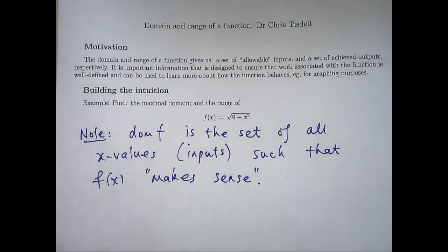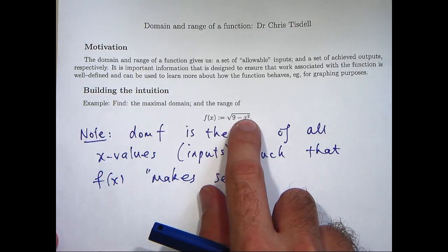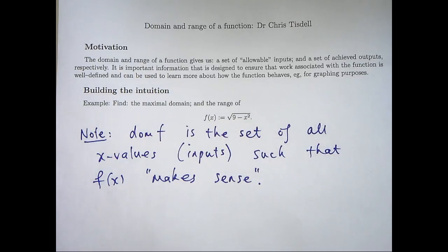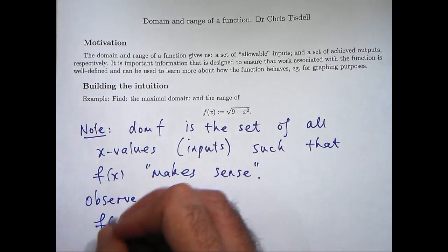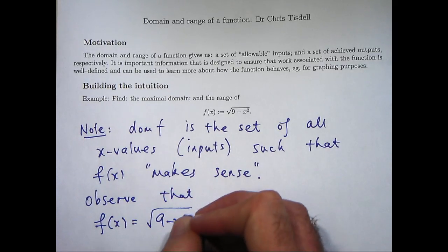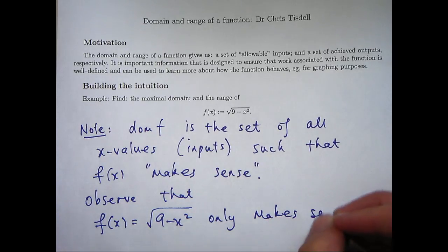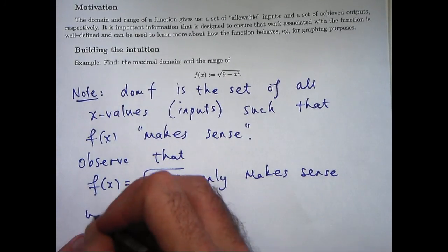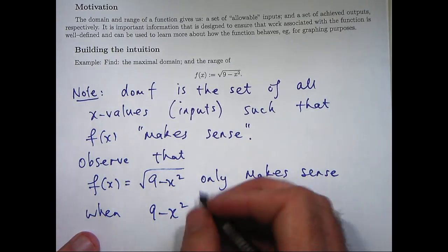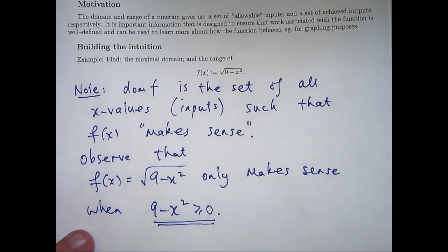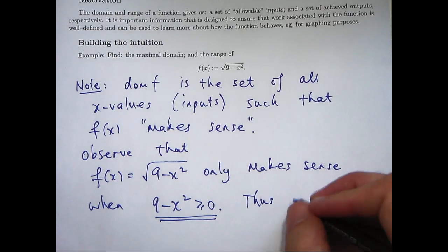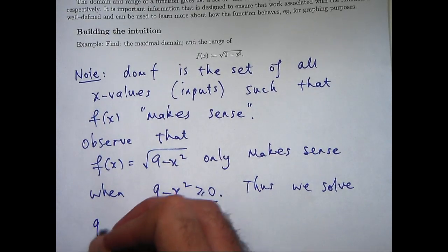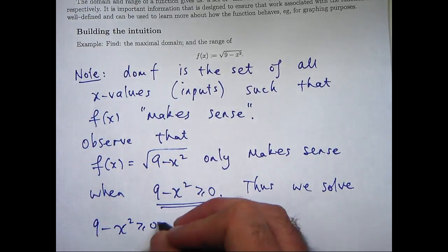How can we do that? Well, the first thing we notice is that the square root of 9 minus x squared only makes sense when 9 minus x squared is greater than or equal to 0 because we're dealing with real valued functions and we can't take the square root of a negative value. So firstly, observe that our function only makes sense or is well defined when the expression inside the square root sign is greater than or equal to 0. So what we'd like to do is to determine all those x values that make this inequality hold.